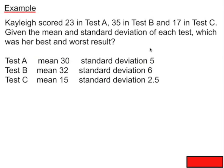To finish, calculate the z-score for Cayley, who scored 23 in test A, 35 in test B, and 17 in test C. Using the mean and standard deviation of each of the three tests, calculate Cayley's z-score for each test, and based on these z-scores determine which was her best and worst result.